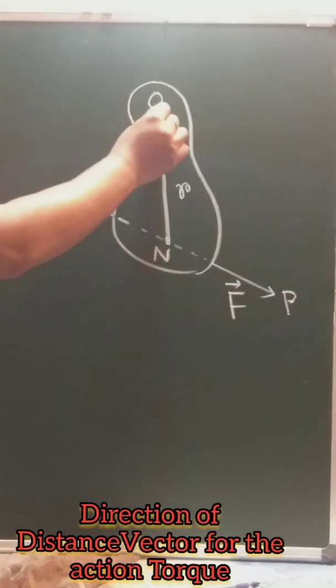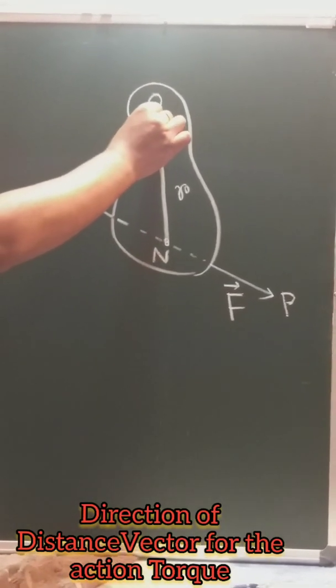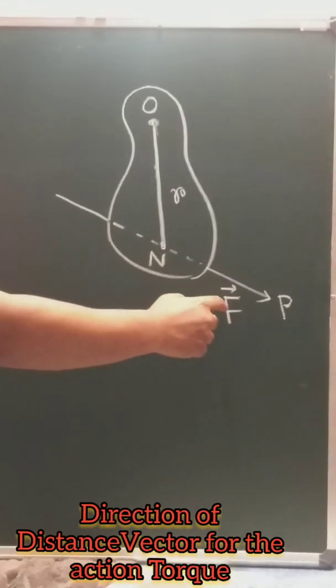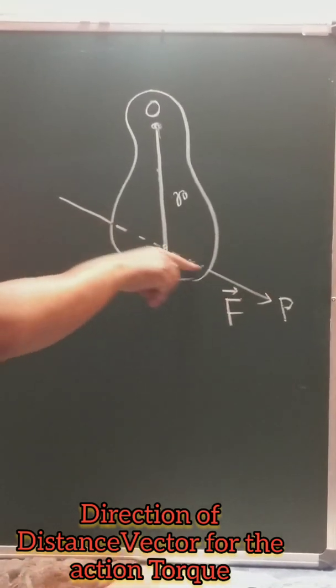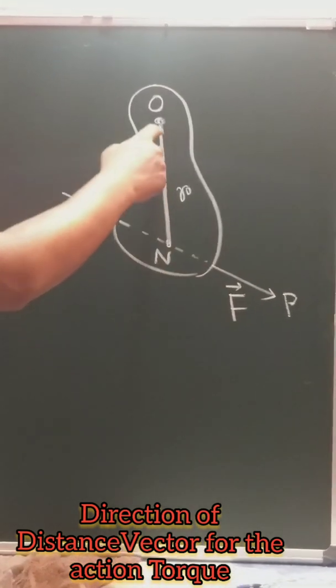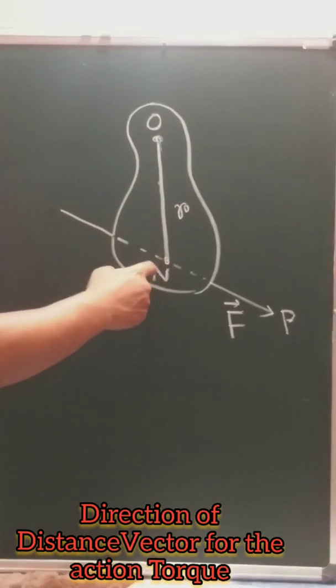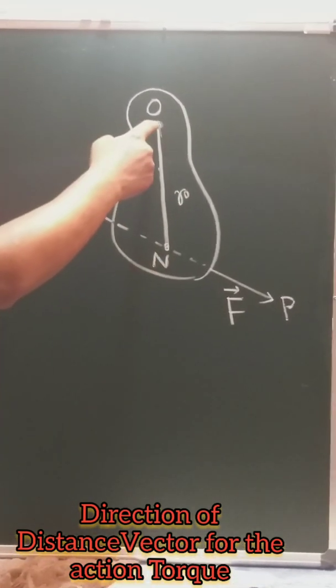This is the body where point O is fixed and a force vector acts along the direction MP on this body. R is the distance of point N from point O.